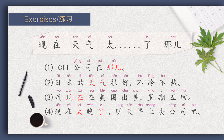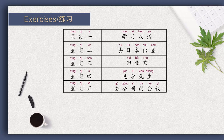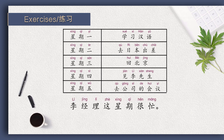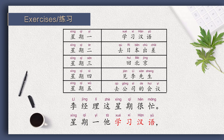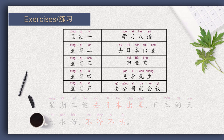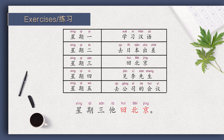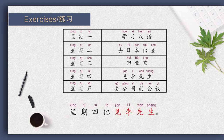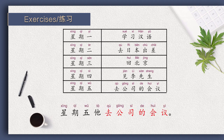Suppose you work as a manager's secretary. Check his schedule for this week and then tell him about it. 李经理这星期很忙。 星期一，他学习汉语。 星期二，他去日本出差。 日本的天气很好，不冷不热。 星期三，他回北京。 星期四，他见李先生。 星期五，他去公司的会议。